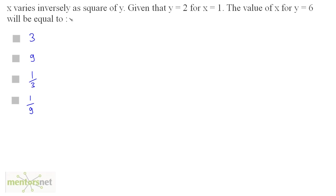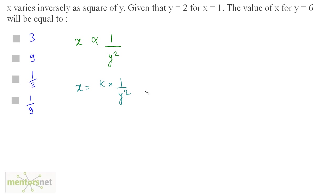x varies inversely as the square of y, so this can be written as x is inversely proportional to y squared. To convert this into an equation, you need to add a constant k. So I can write x equals k times 1 by y squared, therefore x equals k by y squared. This is the basic equation that relates x and y.